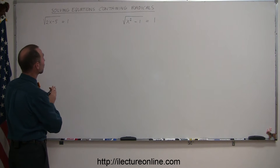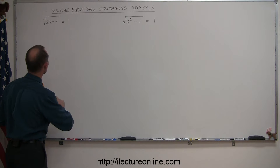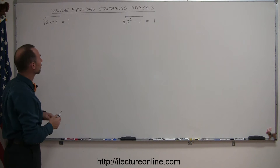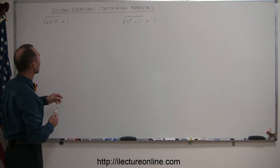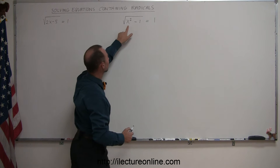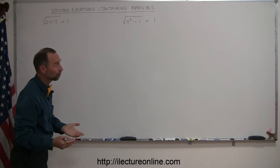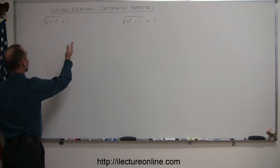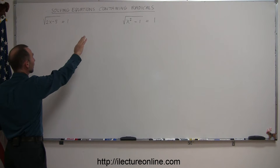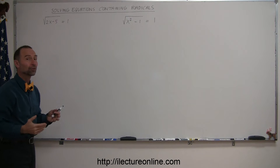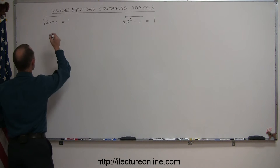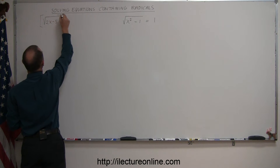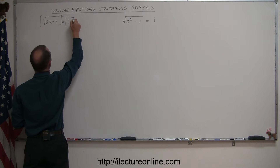Starting with these, notice that we have an equation. We have a left side, a right side, an equal sign — that constitutes an equation — but there's also a radical sign in there. In order to solve these equations for x, we first have to get rid of the radicals. If we can separate the radicals on one side from things that are not radicals on the other side, then all you have to do is simply square both sides to get rid of the radicals. In this case, we're going to square the left side, and we're going to square the right side.